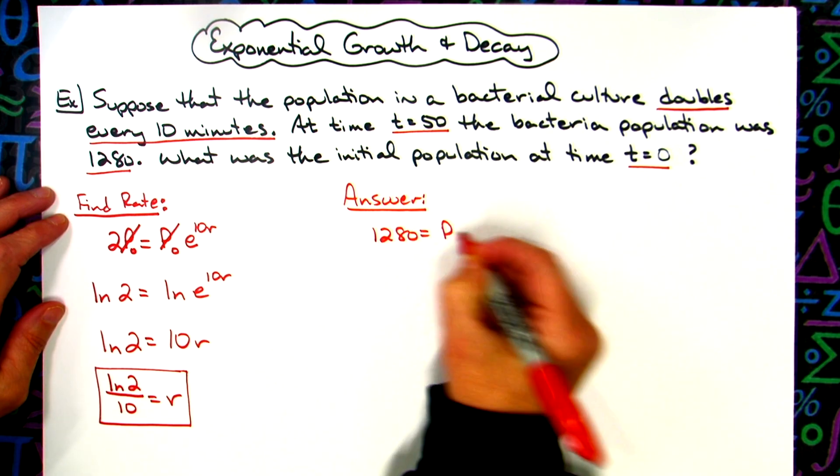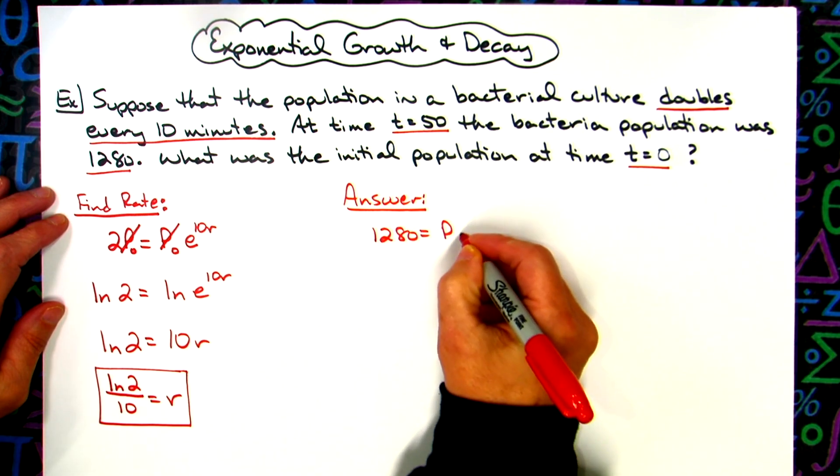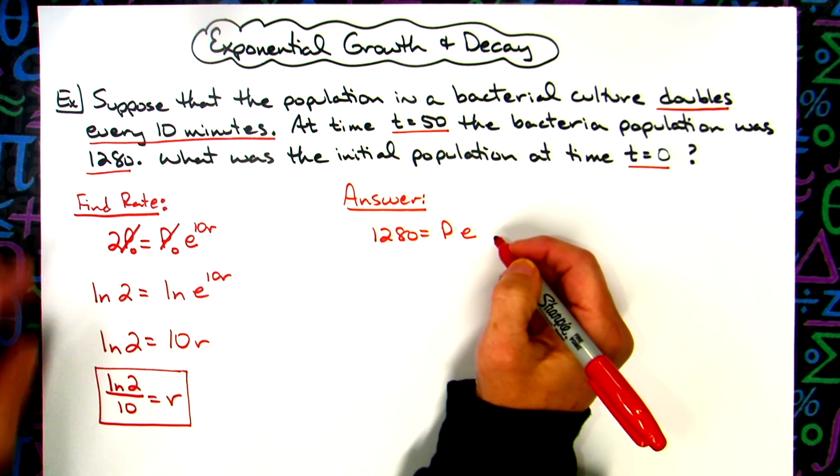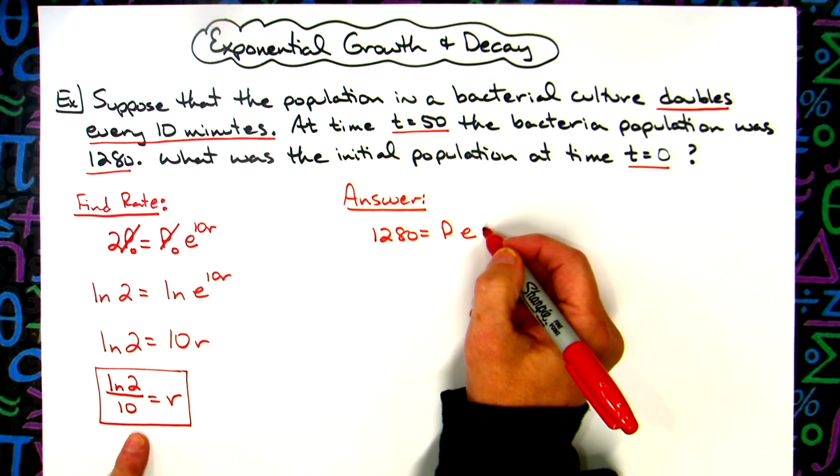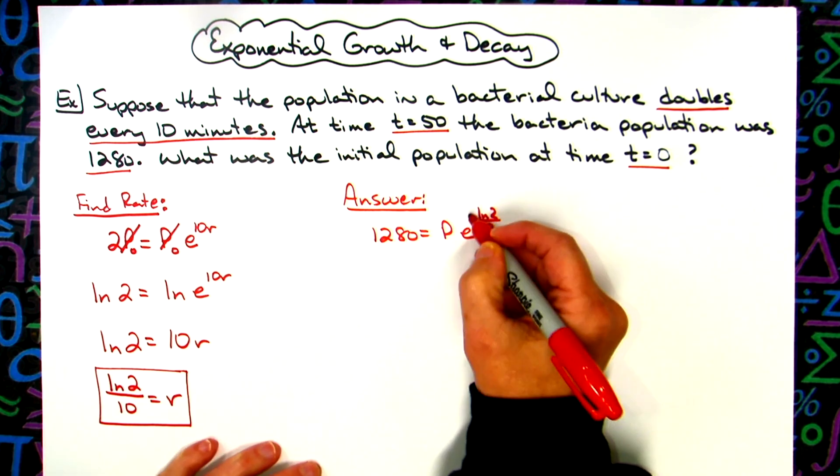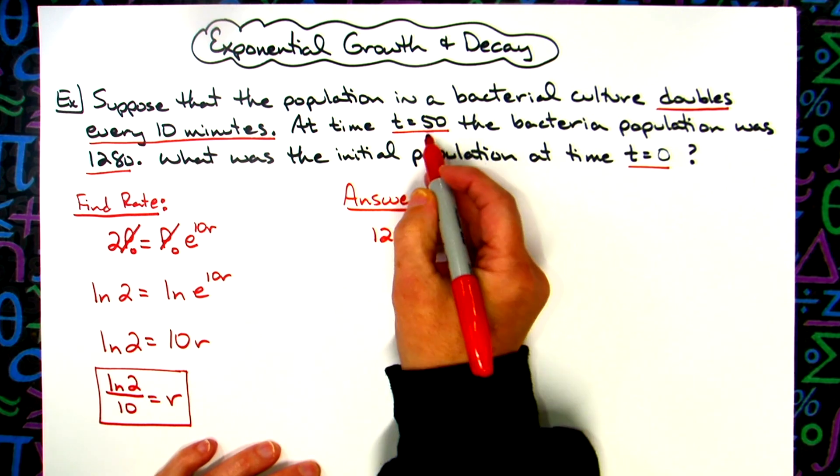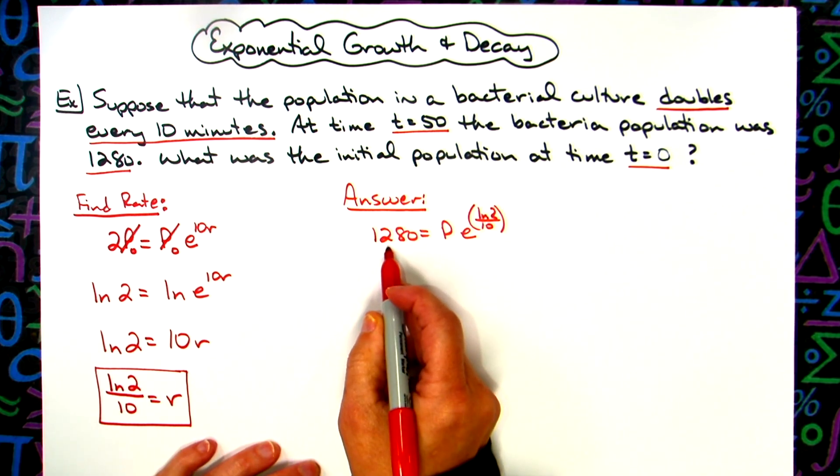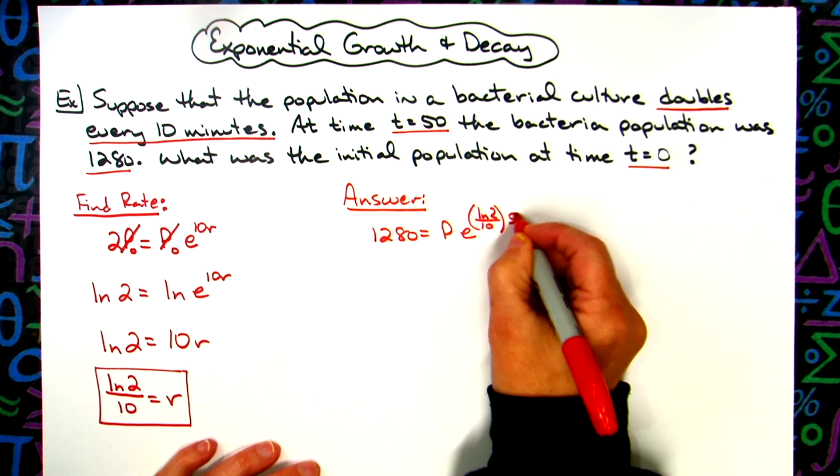So I'm ending at 1280. I don't know what the initial population is. I've got e raised to my rate, which I now know as natural log of 2 over 10, and then the rate times the amount of time, and that's 50 for that population of 1280. So times 50.